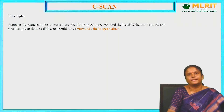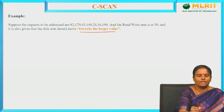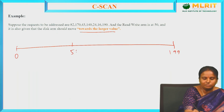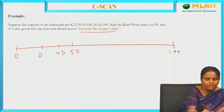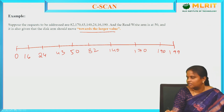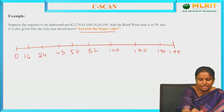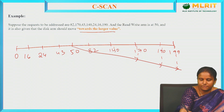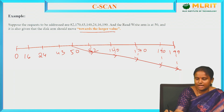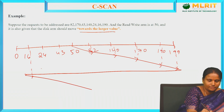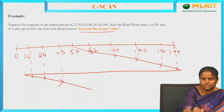Let us see the C-SCAN example problem. The disk arm range is 0 to 199. Head starts at 50. The request queue is: 43, 24, 60, 82, 140, 170, and 190. It moves towards the larger value: 190, 170, 140, 82, then wraps around circularly to the low end, picking up 16, 24, and 43.